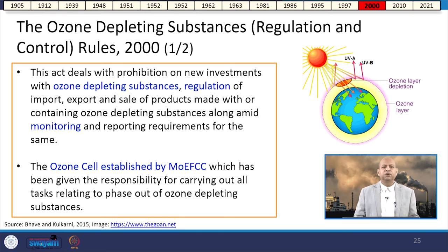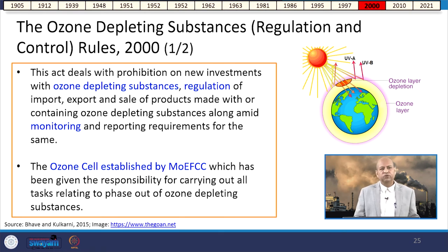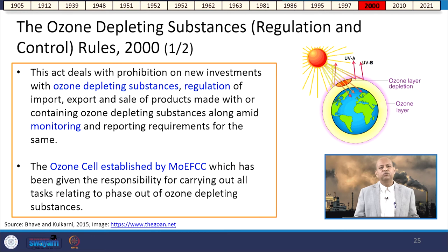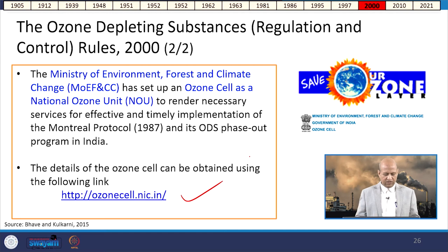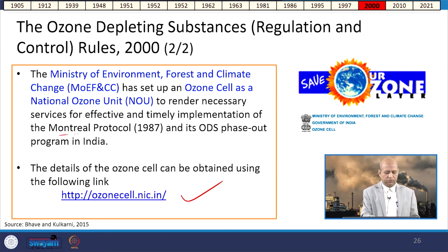The Ozone Cell established by the Ministry of Environment, Forest and Climate Change was given responsibility for carrying out all tasks relating to phasing out of ozone-depleting substances, in line with the Montreal Protocol.